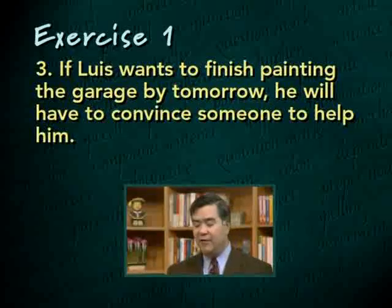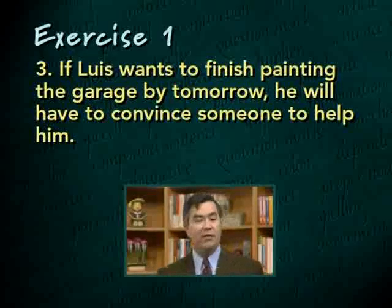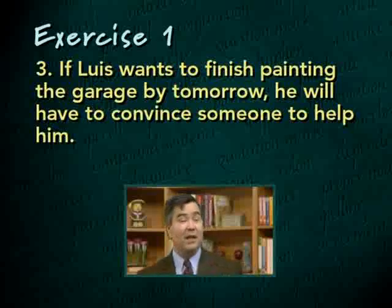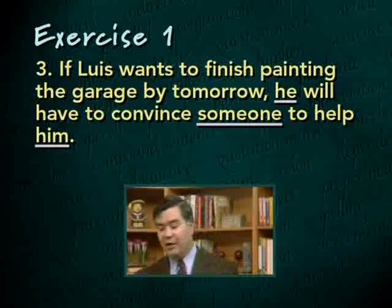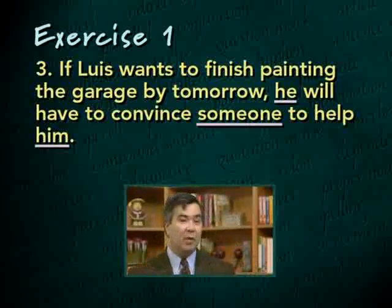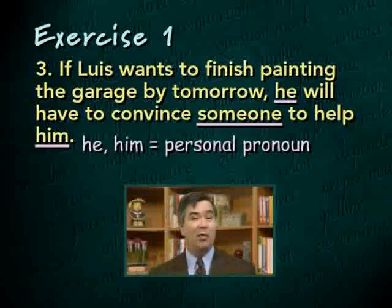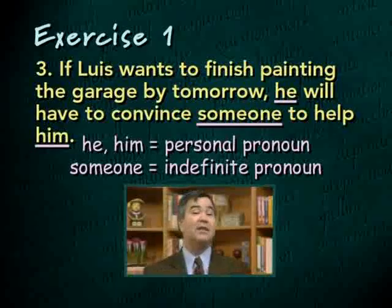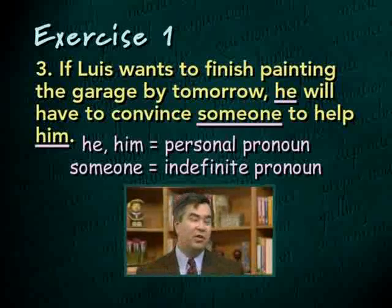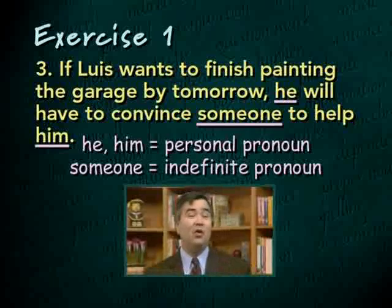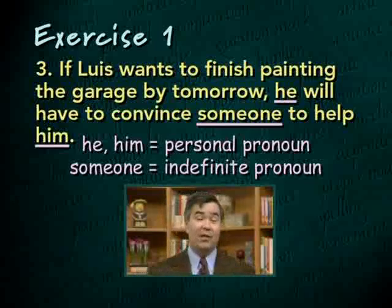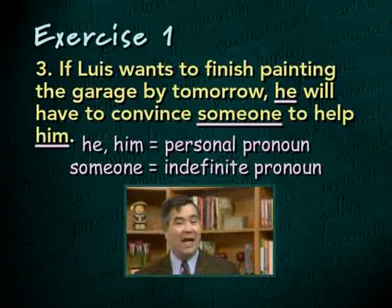'If Luis wants to finish painting the garage by tomorrow, he will have to convince someone to help him.' There are three pronouns: he, someone, and him. He and him are personal pronouns. Someone is an indefinite pronoun — notice how it refers to a person who is not specified. Luis doesn't even know who that person would be, so an indefinite pronoun is used to indicate the person is unspecified or unknown.